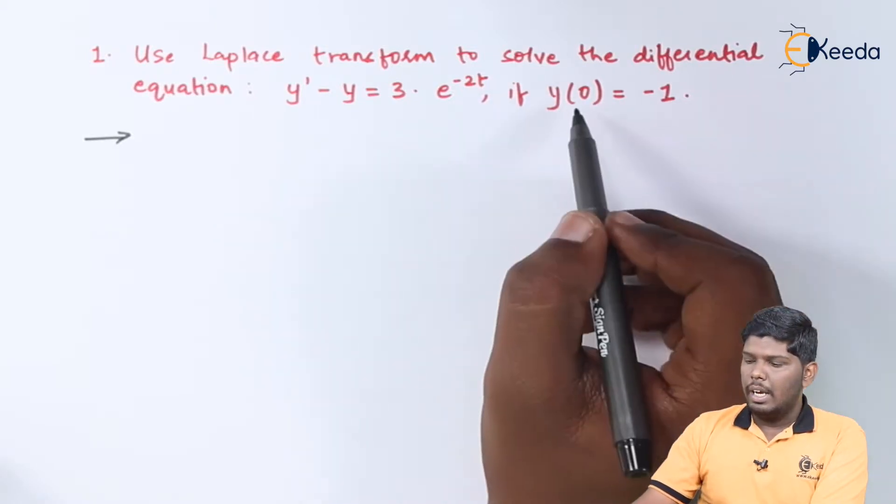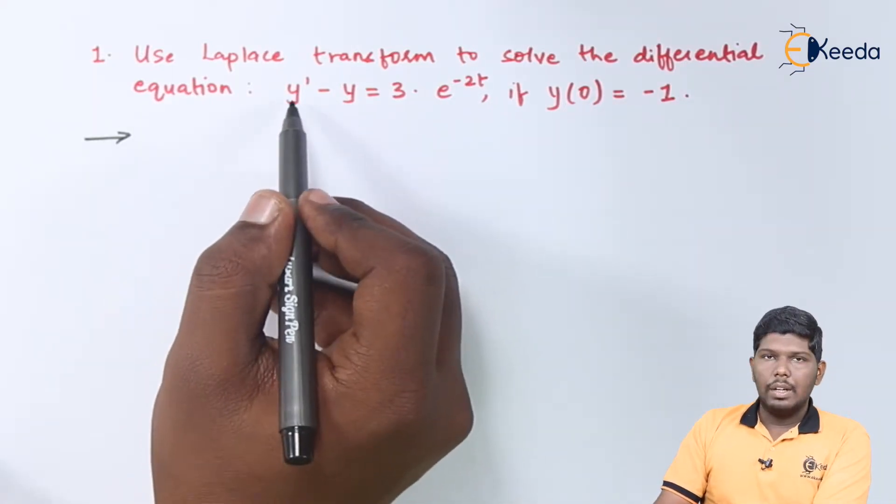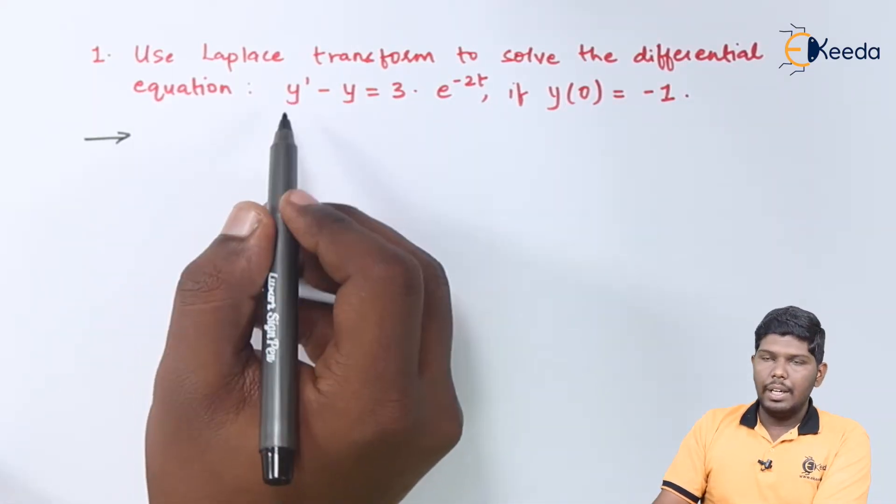y of 0 means if time is 0, the value of y will be minus 1. y dash represents first derivative, so you can write it as dy by dt.